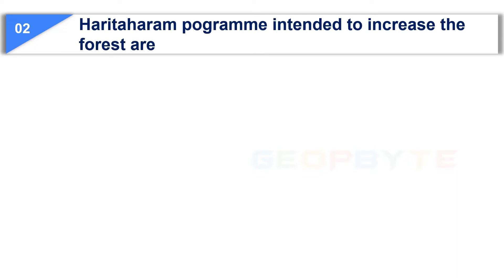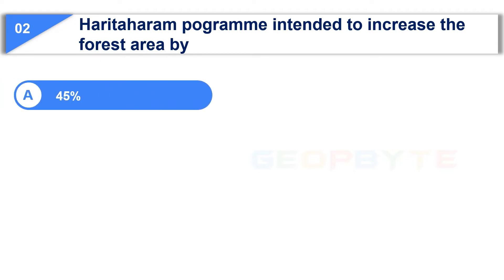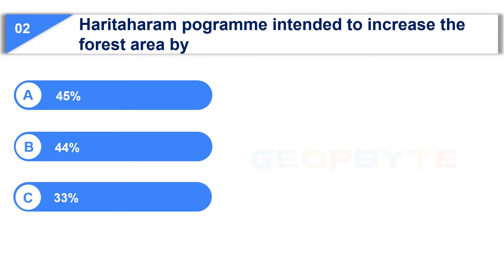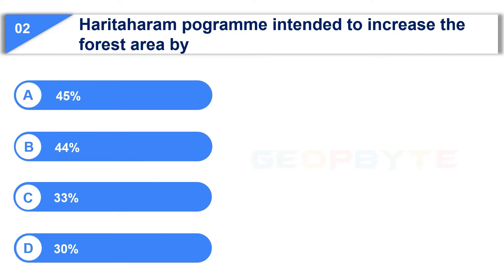The second question is: Haritha Haram Program intended to increase the forest area by — Option A: 45%. Option B: 44%. Option C: 33%. Option D: 30%.